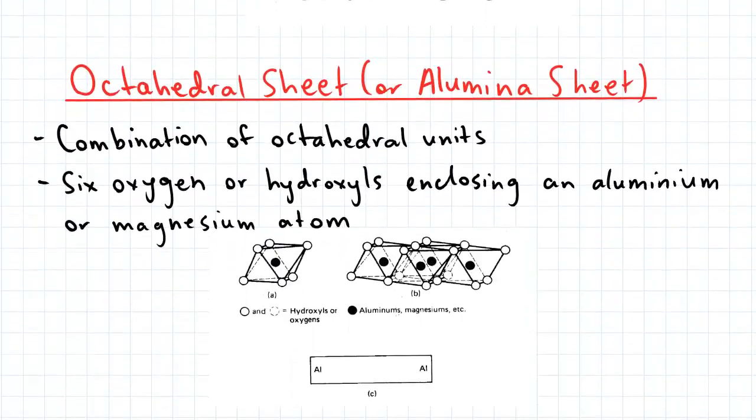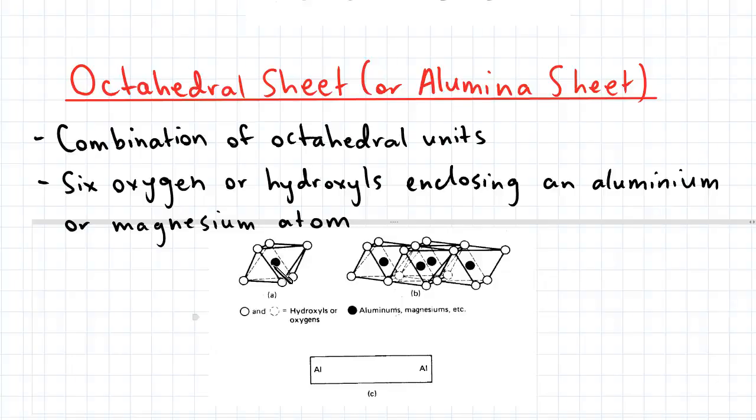So the second fundamental crystal sheet we have is the octahedral sheet, also known as the alumina sheet. The alumina sheet is made up of octahedral units, each unit consisting of an aluminum or magnesium atom, surrounded by six oxygens or hydroxyls.